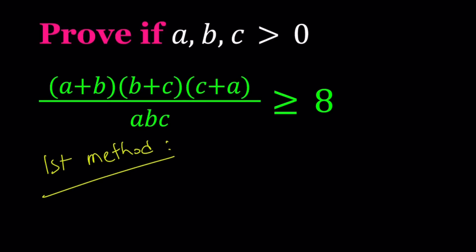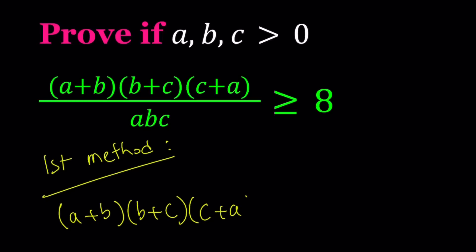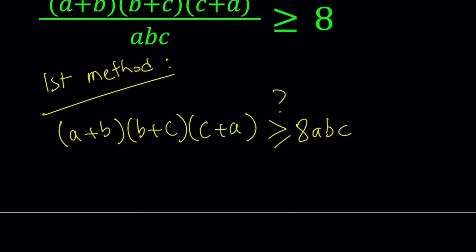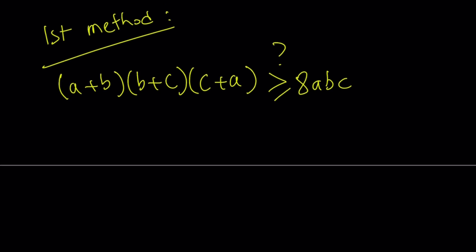For the first method — and for all methods, pretty much — I'll be proving the alternative form. Let's go ahead and multiply both sides by ABC. Since ABC is positive, it's not going to change the inequality, and we're going to get the alternate form: (A plus B) times (B plus C) times (C plus A) is greater than or equal to 8ABC. That's what we're trying to prove, and I'm going to demonstrate that it's true for all positive real numbers.